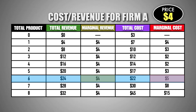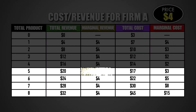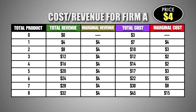Now that the marginal revenue of each unit is only $4, the firm has an incentive to reduce production to only five units because the fifth unit is the last unit that the firm can produce before marginal cost becomes greater than marginal revenue. According to the Optimal Output Rule, the firm should decrease production and produce five units of good M in order to maximize profits.